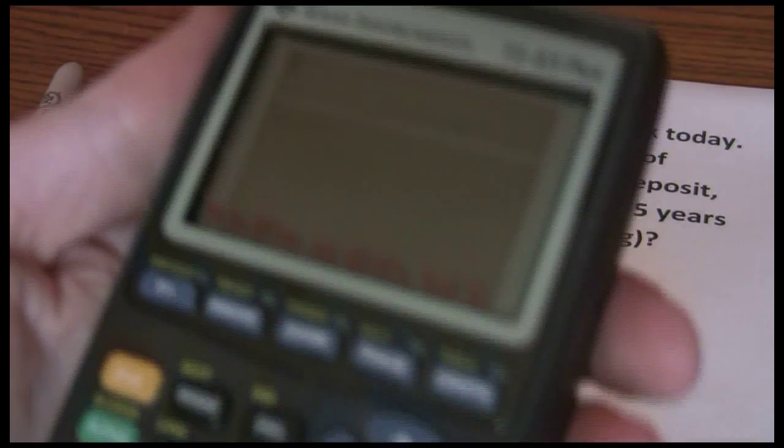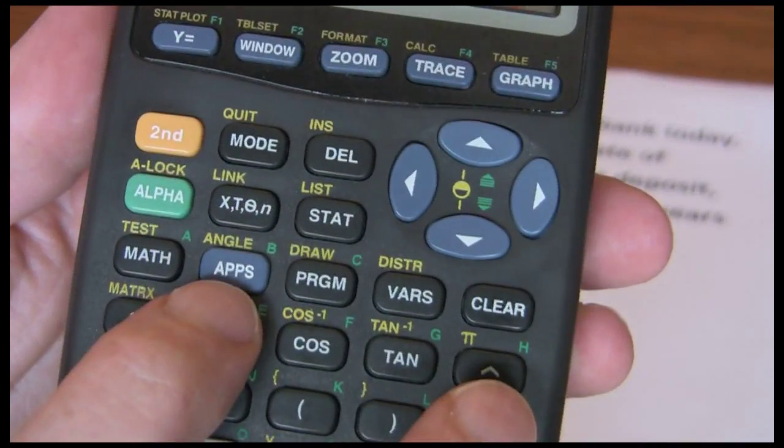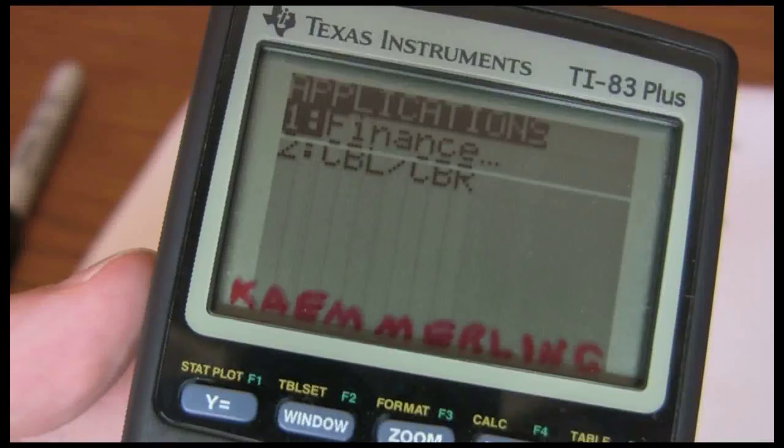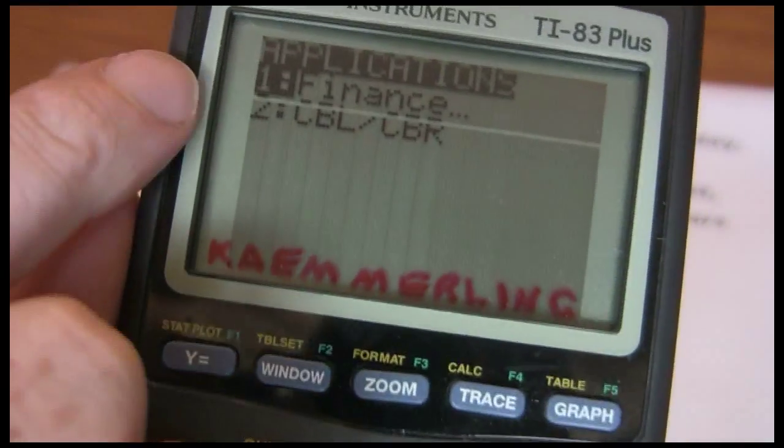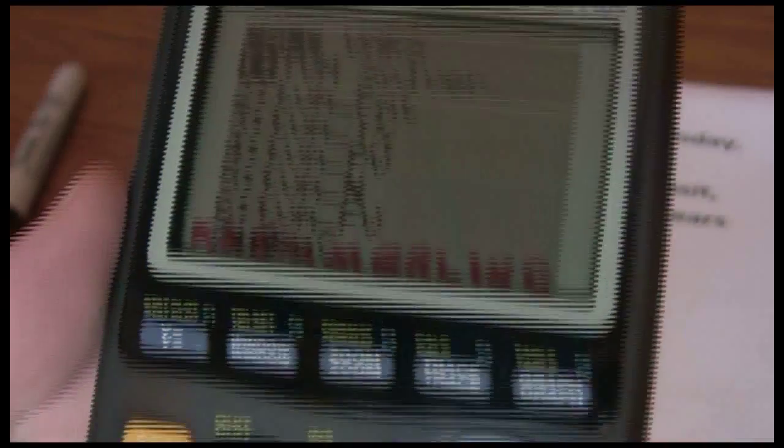In order to start a time value of money problem on the TI-83 or TI-84, first thing you want to do is press apps, go into your applications, and you'll see one of your applications is finance. Just highlight that and press enter to select.